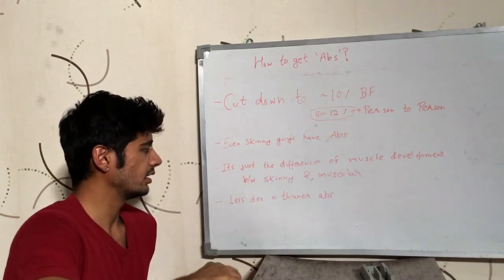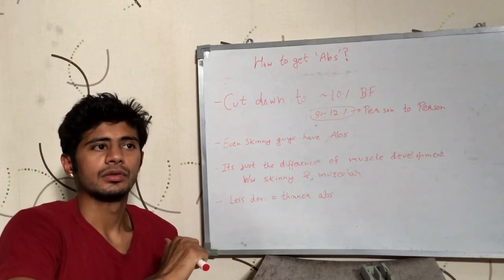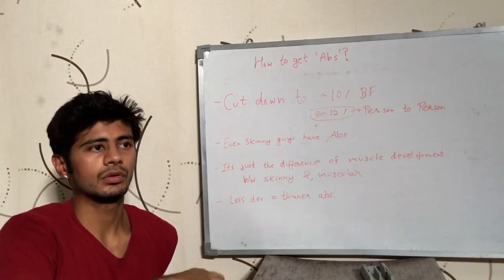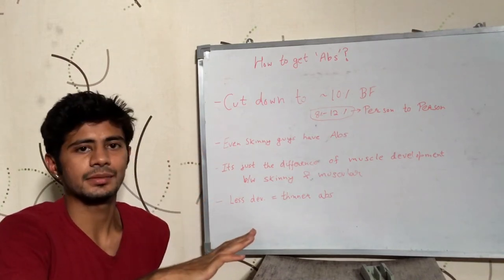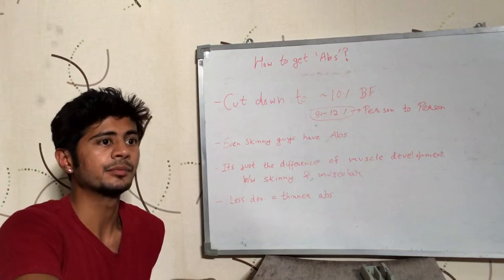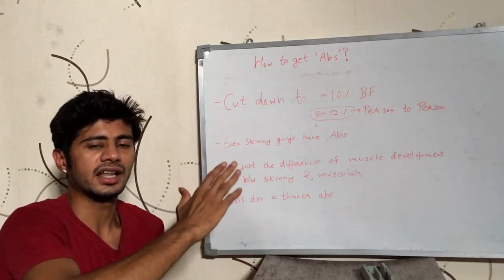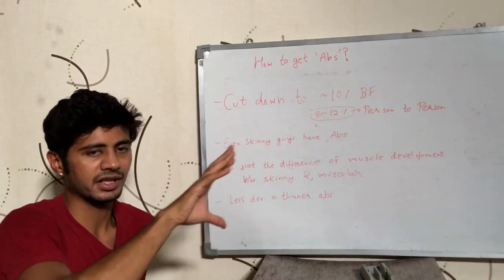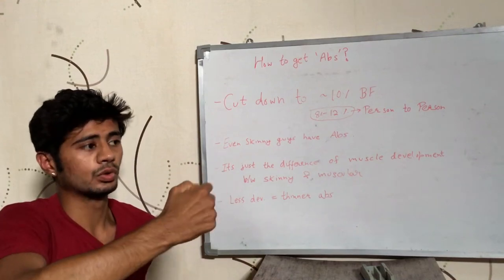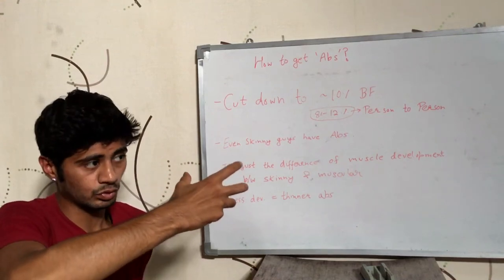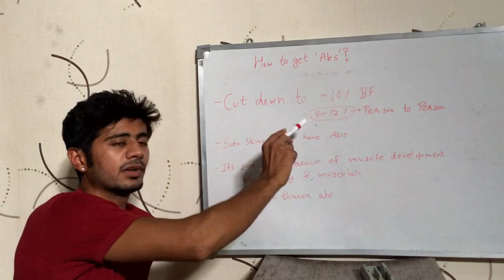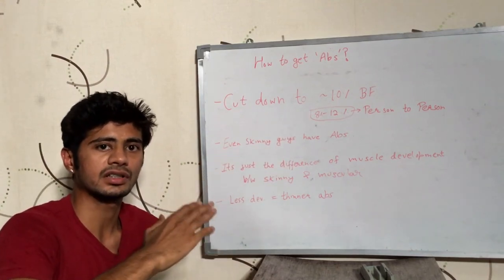The main point about muscle development and abs is this: if you want to get visible abs, doing a lot of crunches alone is not the answer. Abs exercises are not enough on their own. You need to reduce body fat percentage through diet and exercise. That means less calorie intake and consistent exercise. At around 10% body fat, the abs will become visible. Exercise changes the body, abs muscles do develop, but ultimately it is the body fat percentage reduction that reveals the abs.